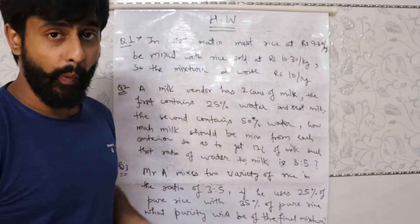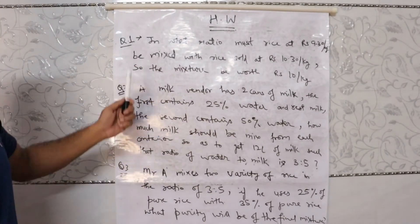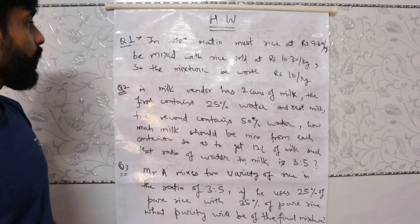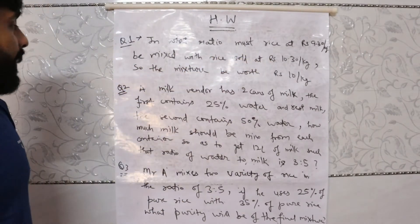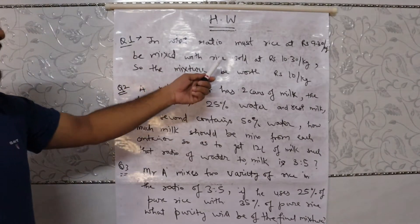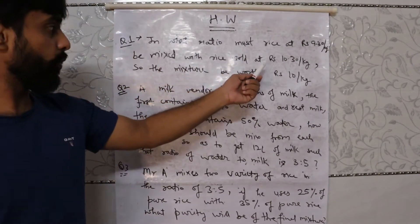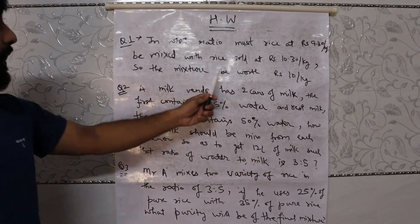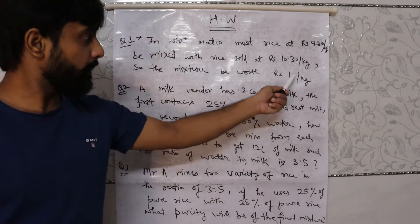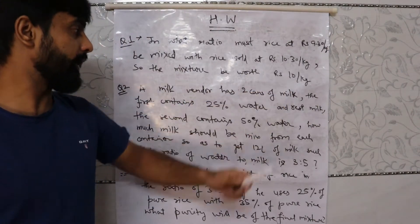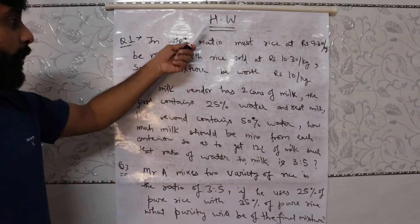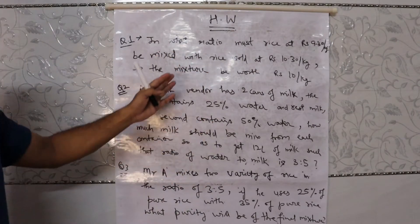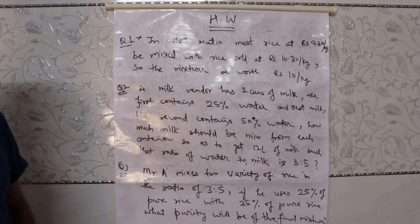Looking at the questions, question number 1 says: In what ratio must rice at Rs. 9.30 per kg be mixed with rice sold at Rs. 10.30 per kg, so that the mixture be worth Rs. 10 per kg? You have to tell the ratio in which the variety of rice will be mixed to make it worth Rs. 10 per kg.